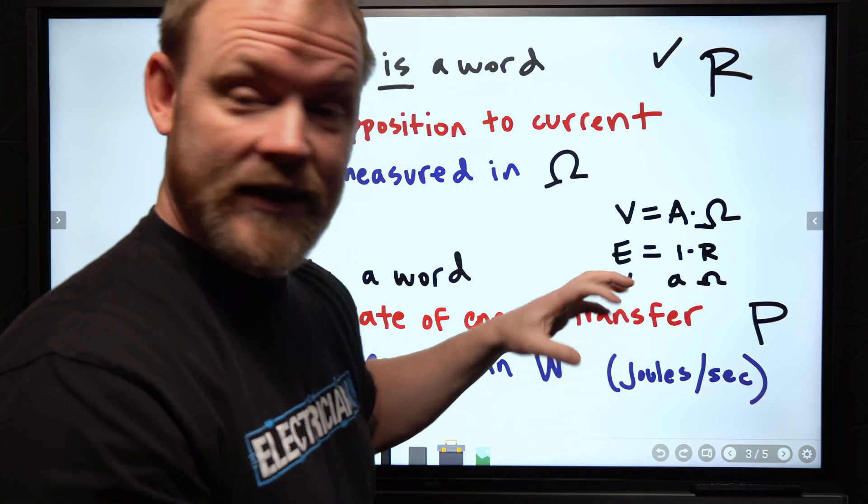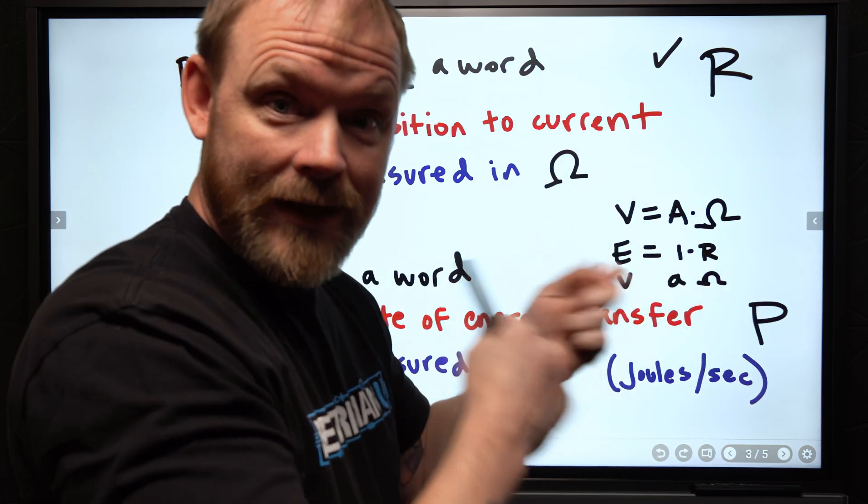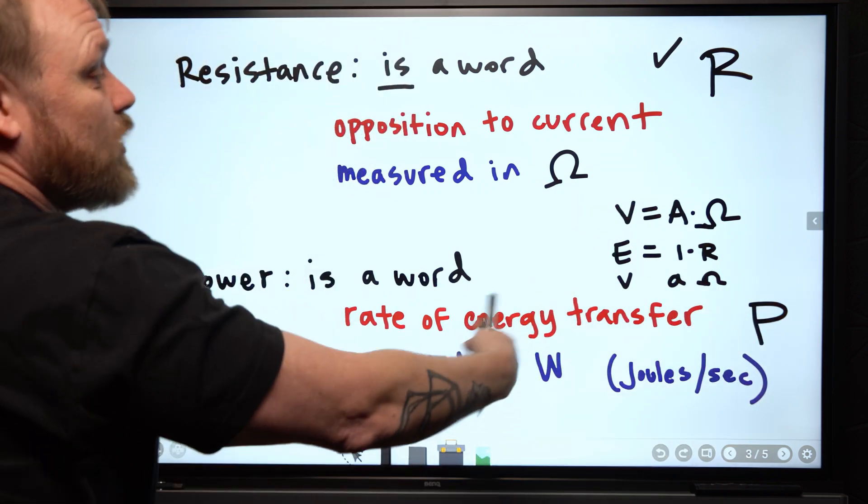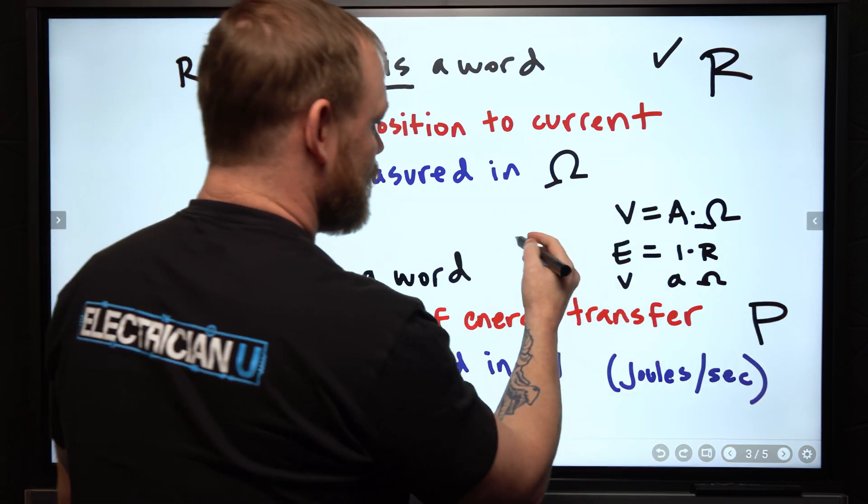Power is a rate of energy transfer per second. Specifically, it's how many joules of energy is transferred every single second in a constant power situation. And it's measured in watts.